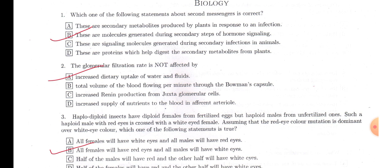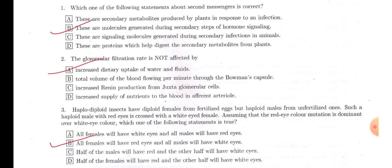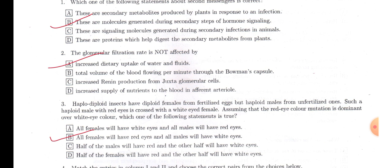The second messenger may be cyclic AMP, cyclic GMP, or IP3 (inositol triphosphate), or DAG (diacylglycerol). These are the second messengers generated within the cell after binding of hormone with the receptor. So option B: there are molecules generated during secondary steps of hormone signaling. This will be the answer.